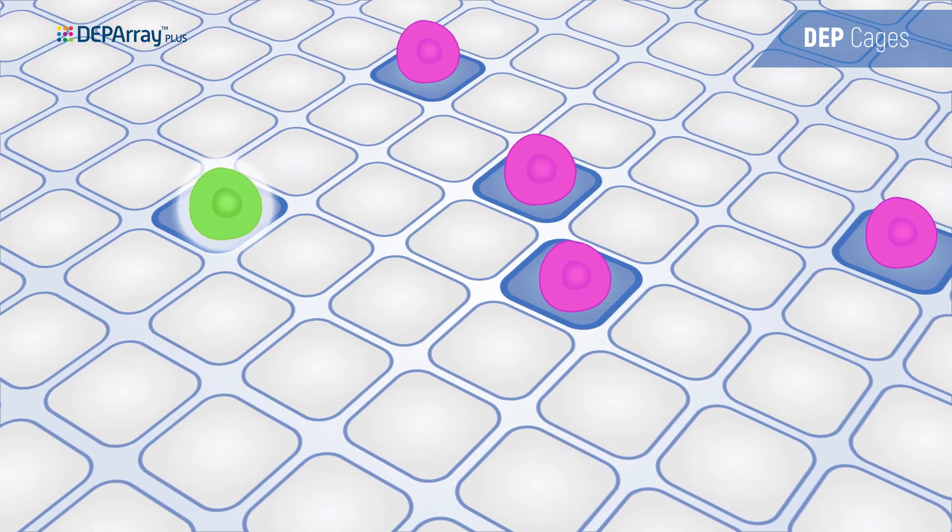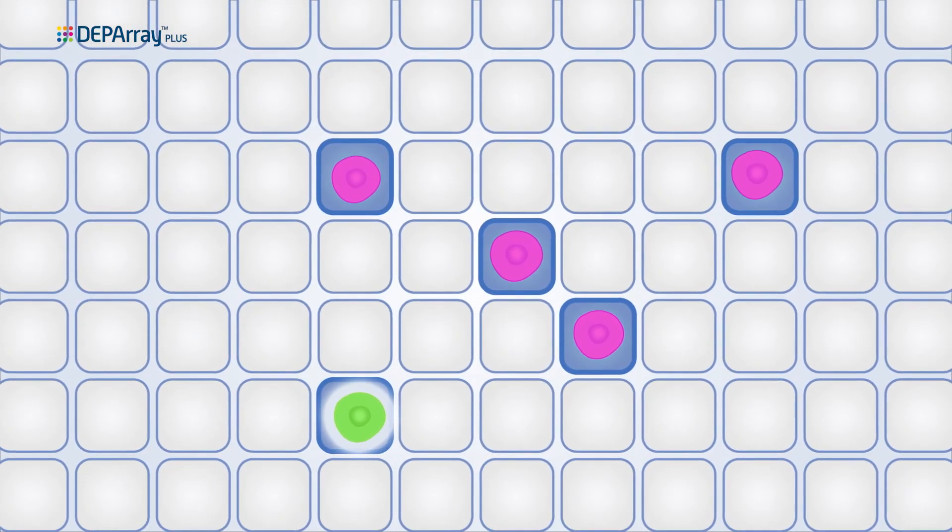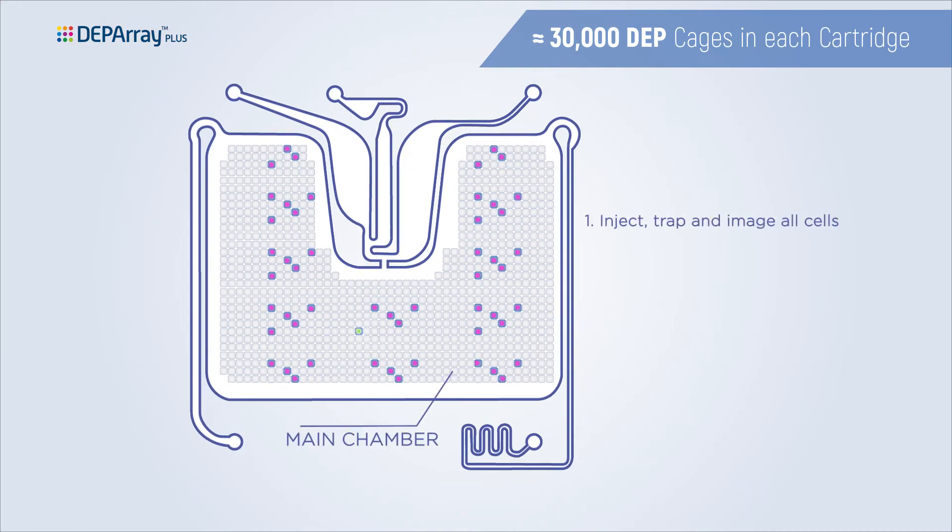Cells move from random suspension to orderly single-cell distribution in DEP cages in the chamber. Precise electronic control of cage motion in the microchip chamber enables outstanding performance in single-cell sorting.